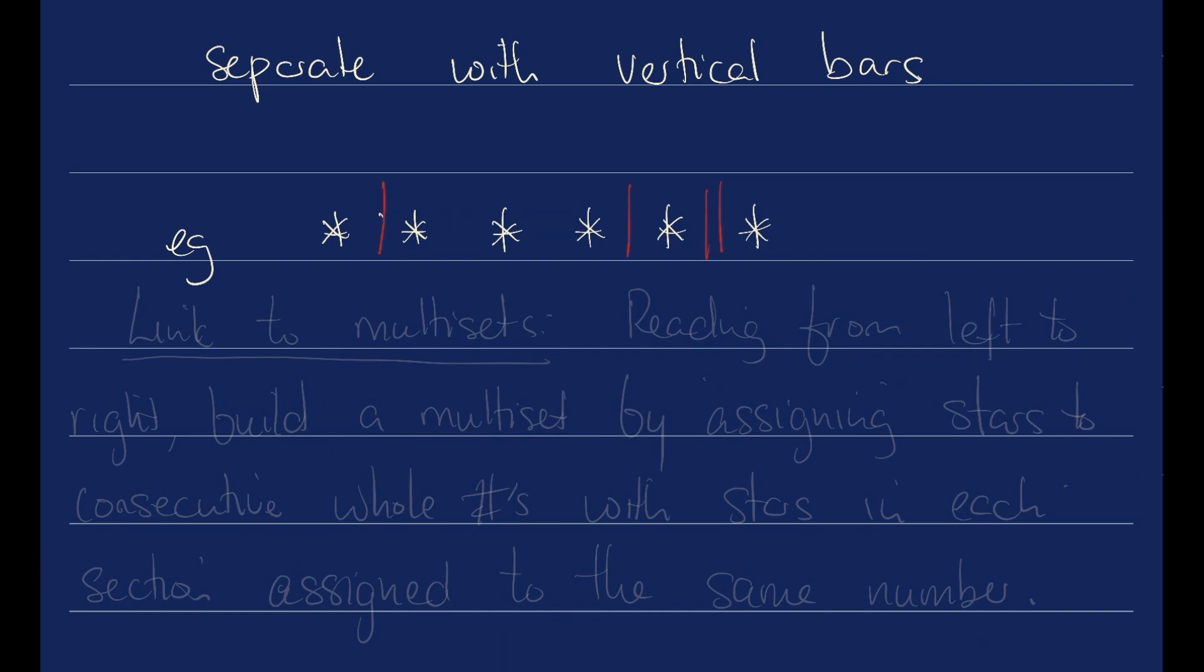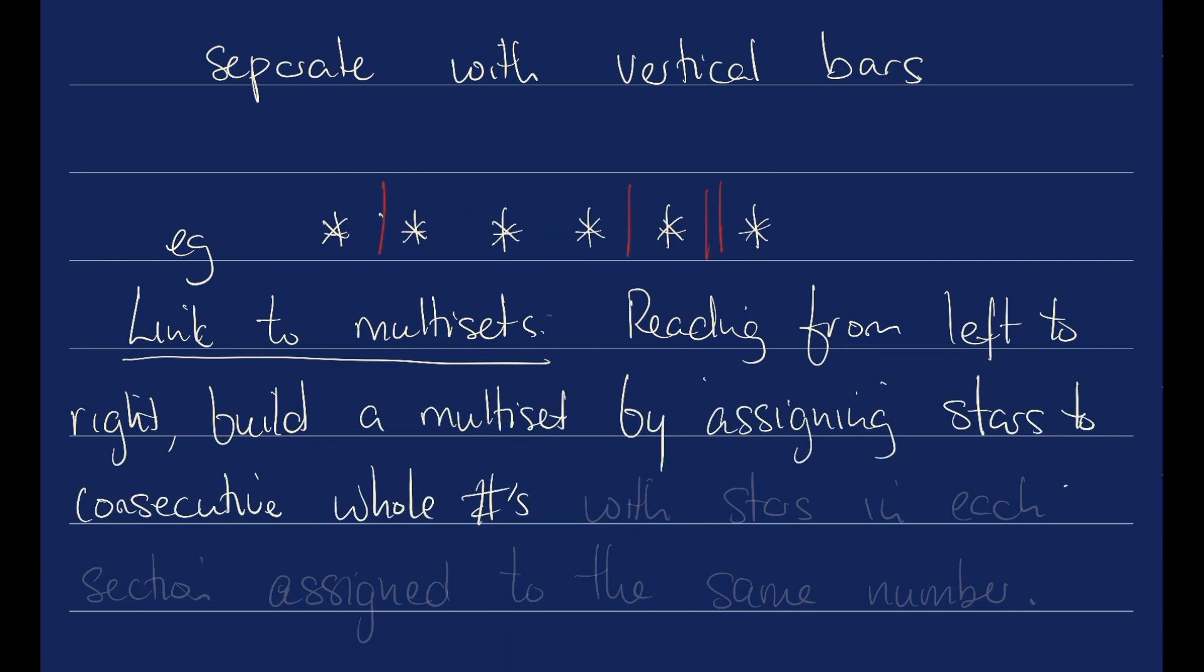This is stars and bars. Here's how we link it to multi-sets. Reading from left to right, build a multi-set by assigning stars to consecutive whole numbers, with stars in each section assigned to the same number.